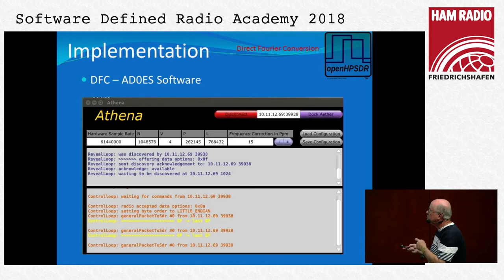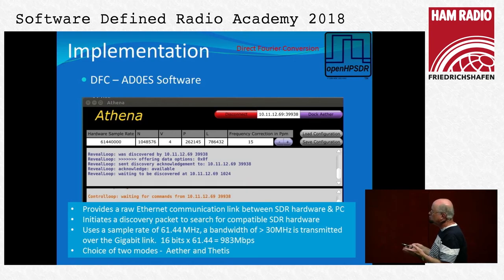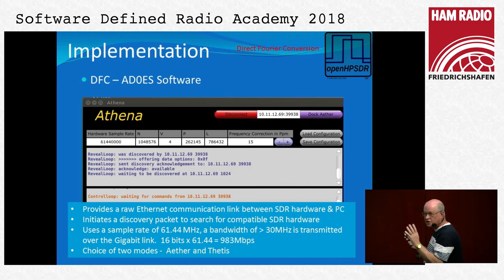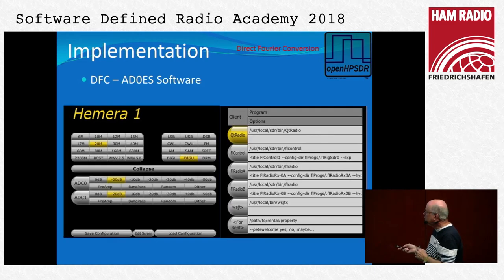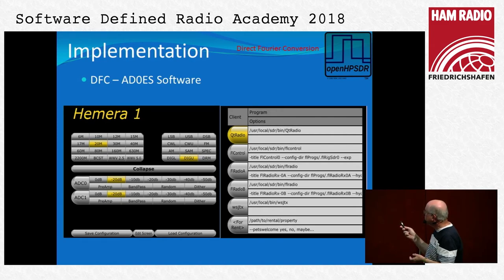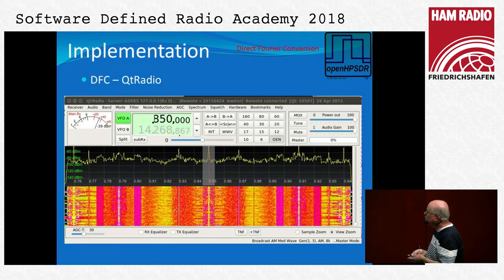I'm running out of time so I'll run through quick slides — the slides will be available. This is work that Steve did. He's written a lot of Linux code that supports Direct Fourier Conversion. The code, called Athena, provides a raw Ethernet communications link between the SDR hardware and the PC and does the FFT conversion work for you. The next piece of software enables you to select up to 80 digital down-converters. Each of those down-converters is fed into a server, which allows clients — QTRadio, FLDigi, WSJTX — to connect over the internet to any of those 80 digital down-converters.